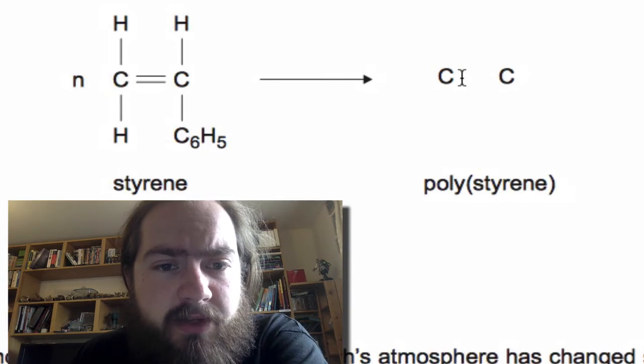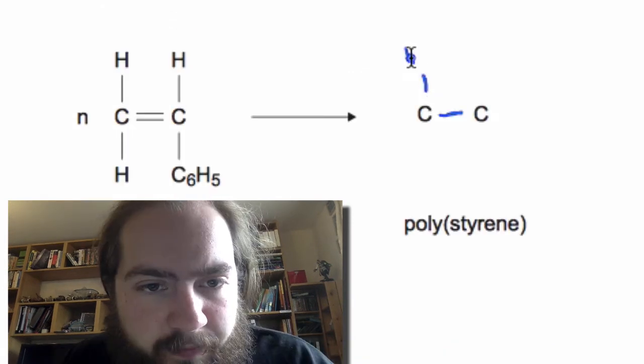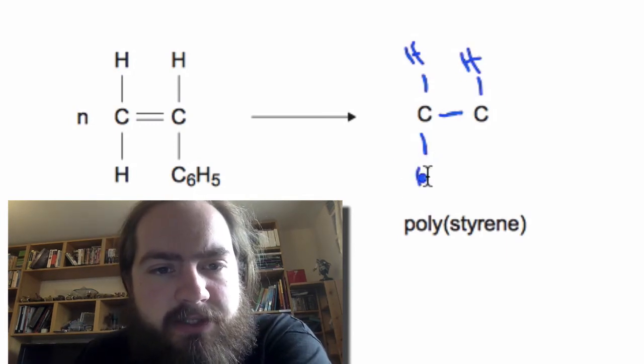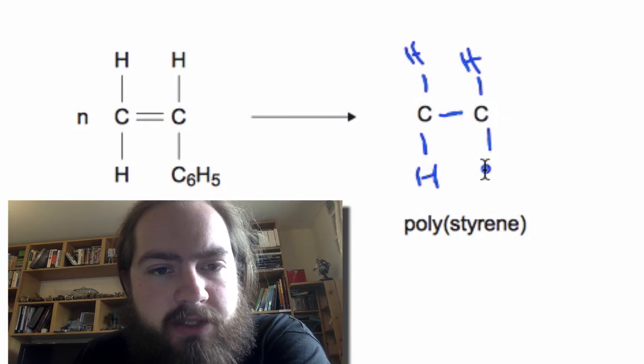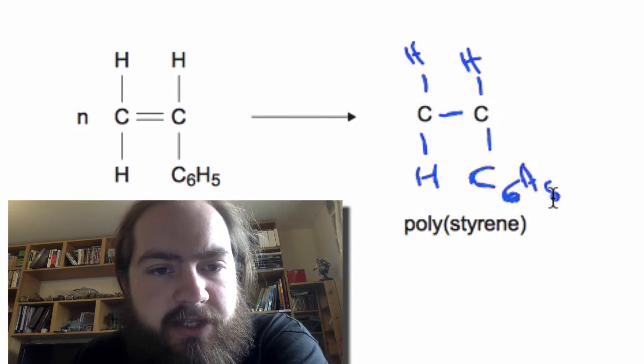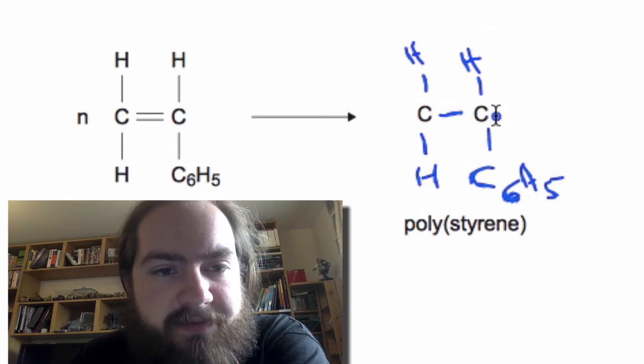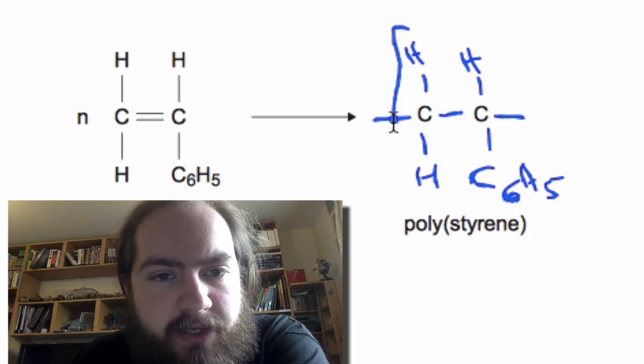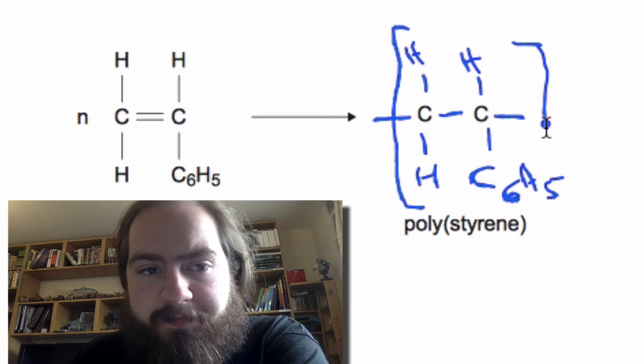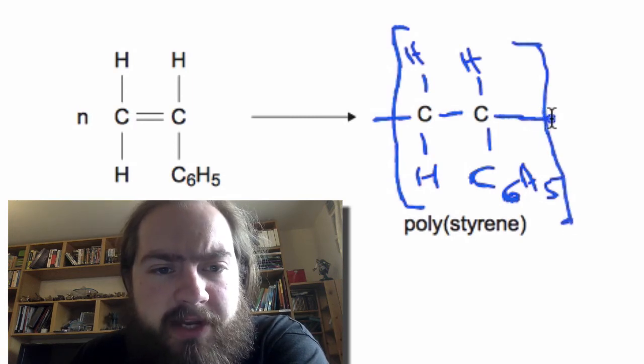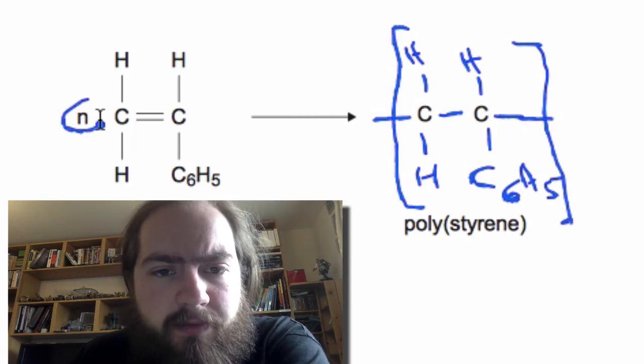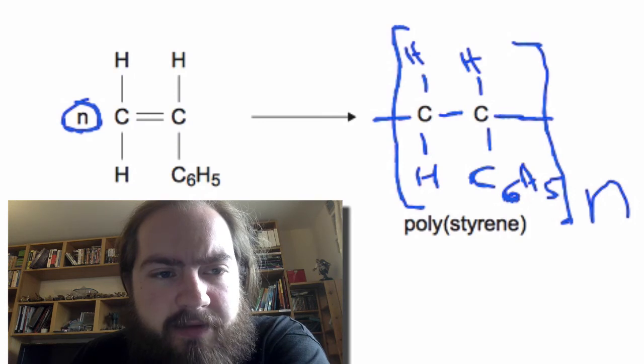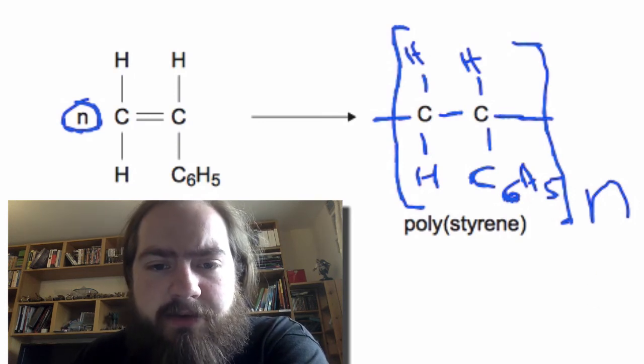You're still going to have the hydrogen at the top and another hydrogen here. You're still going to have the hydrogen here and you're still going to have this C6H5 group here. What's going to change: instead of this double bond you're going to have bonds that form a chain. And the way we represent this, we'll put them in brackets to show that they're repeated throughout the chain. And we've got an n over here, so this will be repeated n times, and that will get us our two marks.